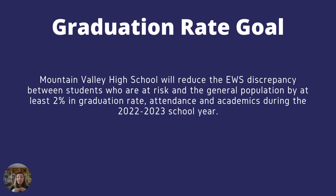Here you can see they're not working with the entire population, but it is still student-centered. They've picked a subset of the student population that they plan to target. You can see what specific growth is going to occur — they're planning on seeing 2% growth in graduation rate, attendance rate, and academics. And finally, this goal is also time-bound, with all of this occurring within the 2022-2023 school year.